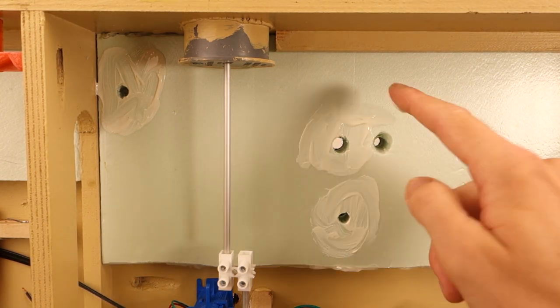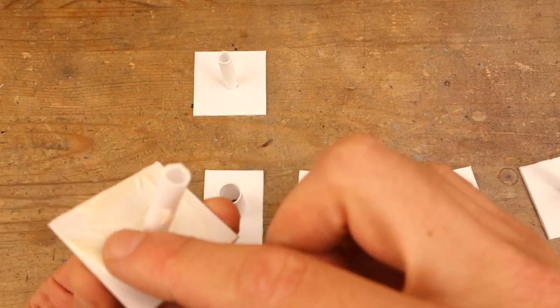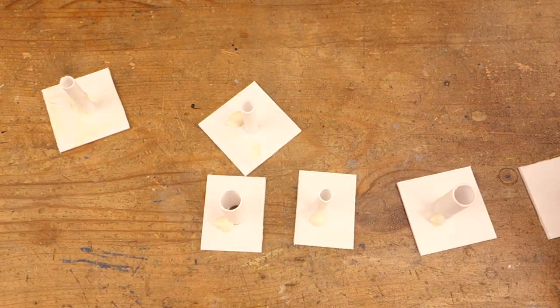I built the channels for the lighting wires the same way using evergreen 234 tubing with an outside diameter of about 11mm.